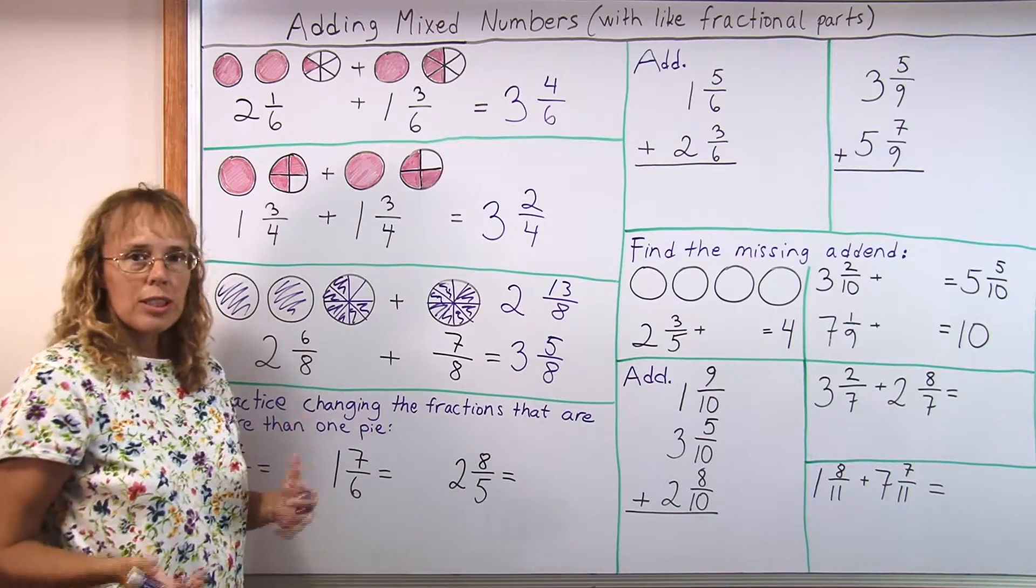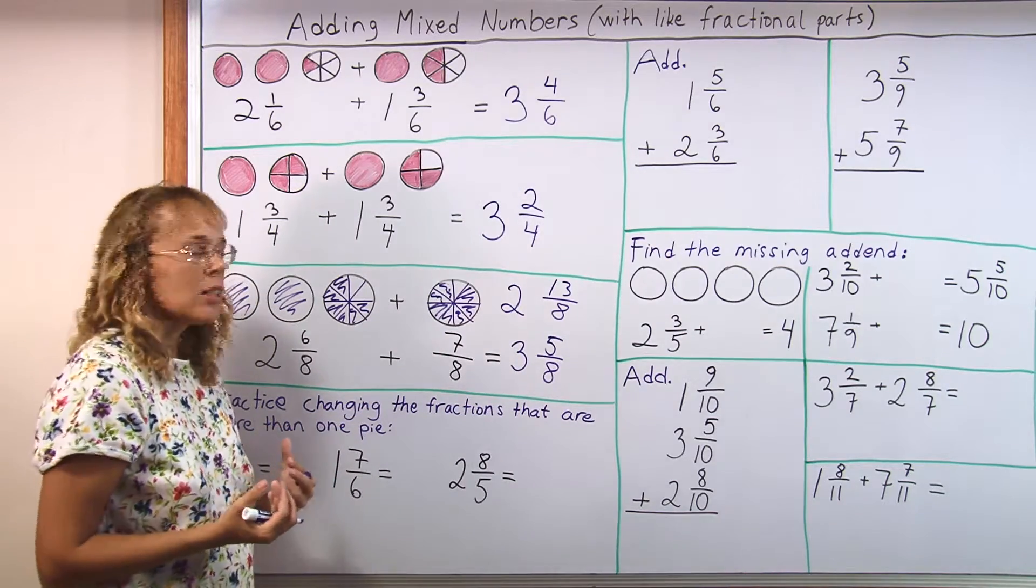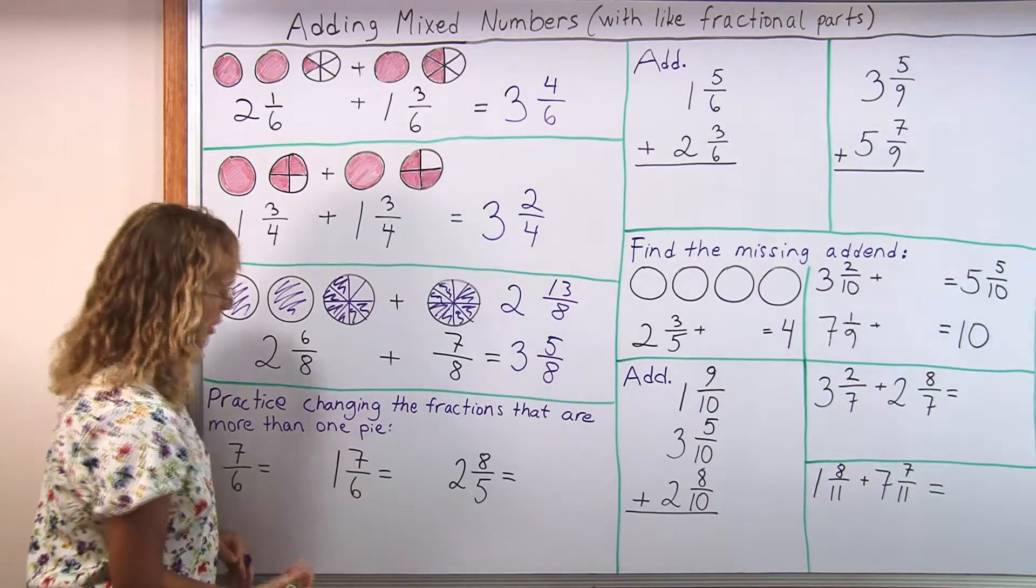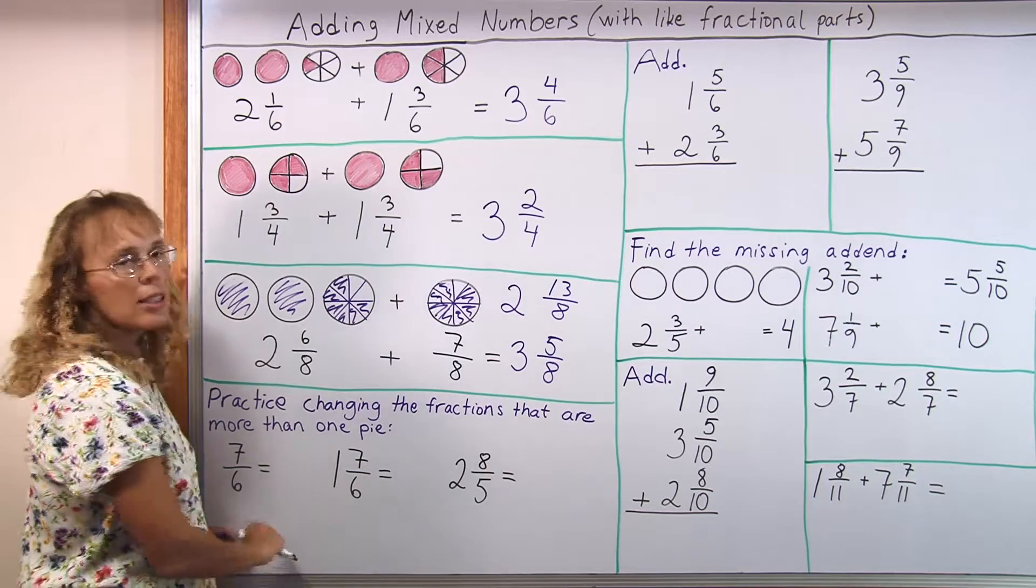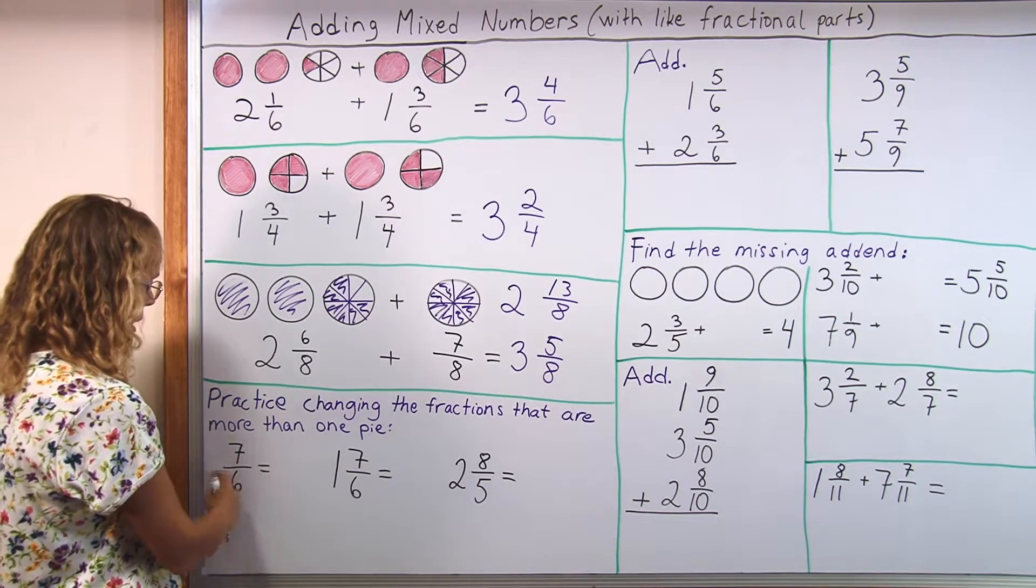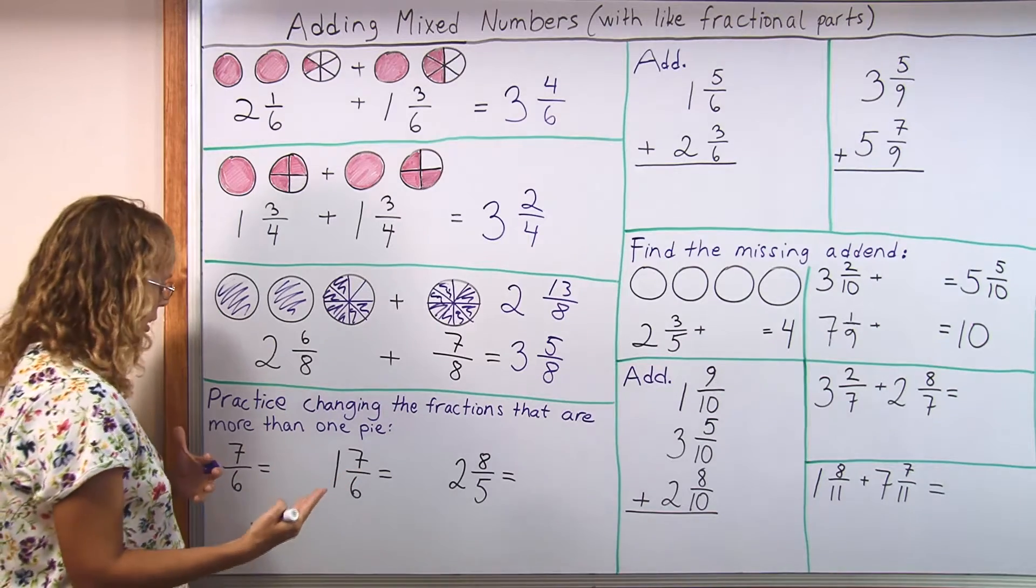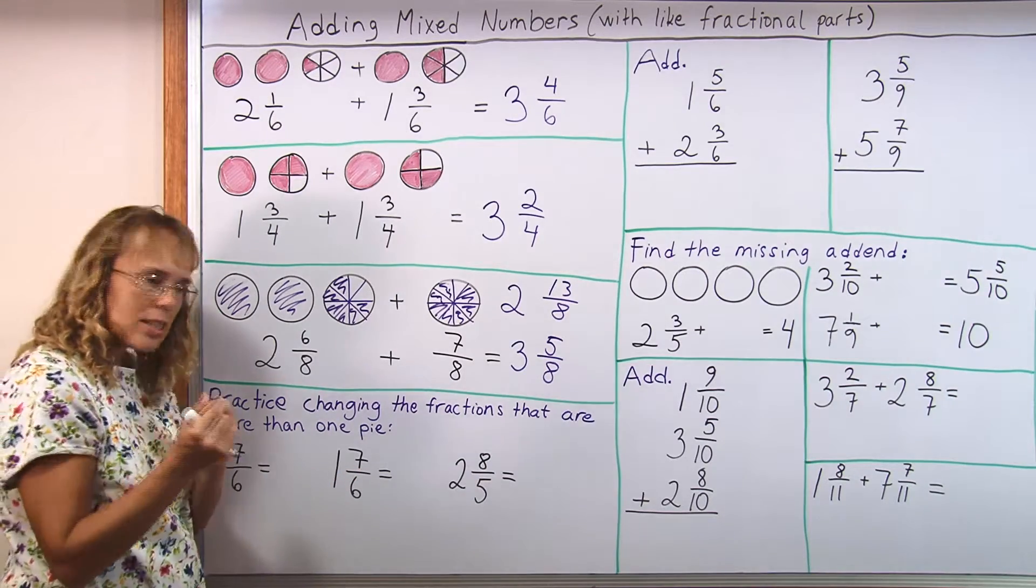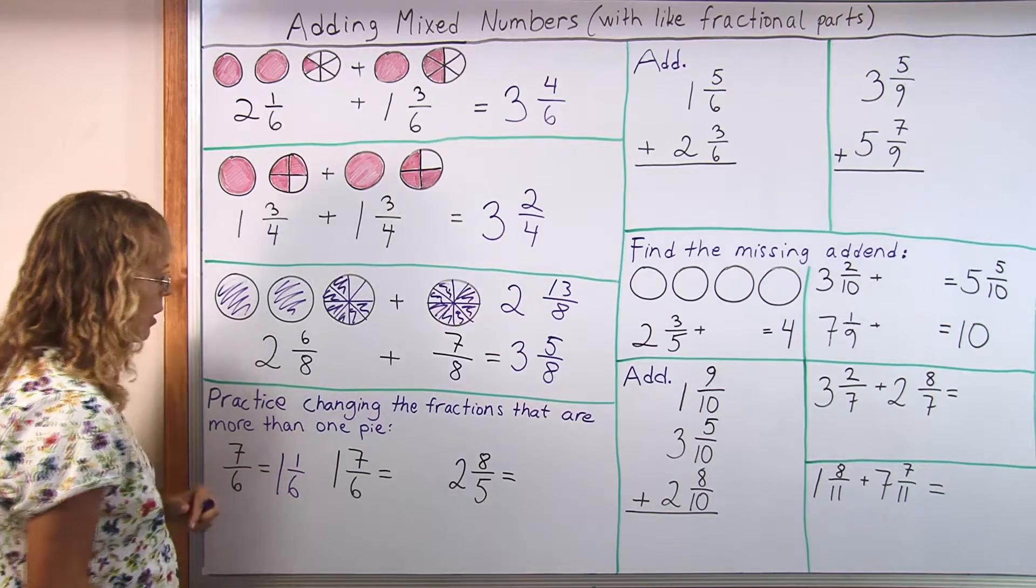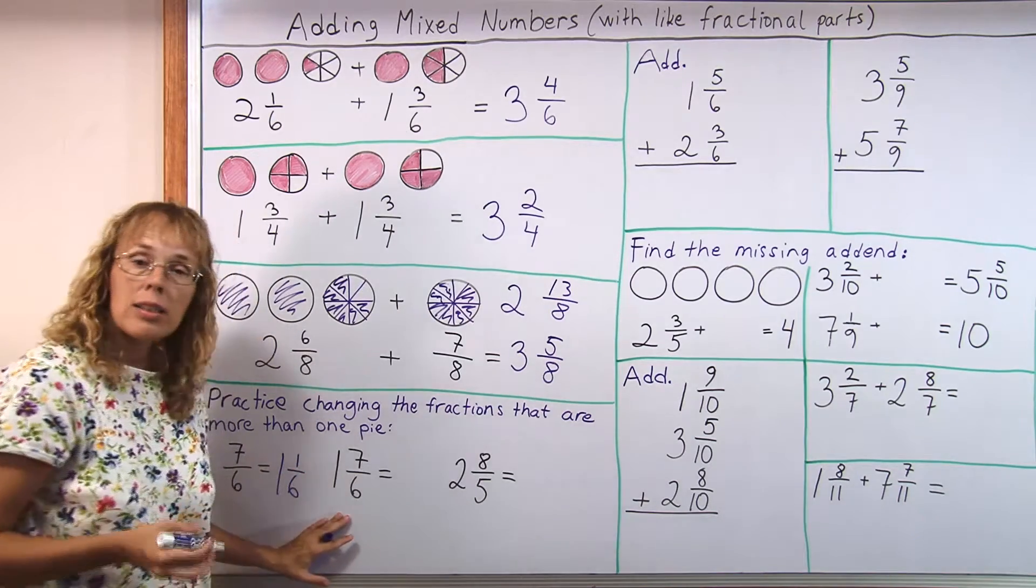In fact, students can practice that process alone without the addition, with these kinds of exercises. For example, 7 sixths, change it so that it doesn't have a fraction that is more than one whole pie. 7 sixths is more than one, because 6 sixths makes one pie and then there's one sixth left over. Now here we have 1 and 7 sixths, which could be an answer to an addition problem.